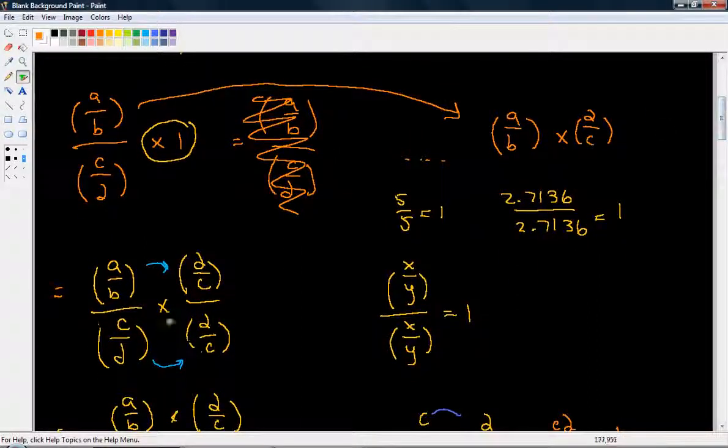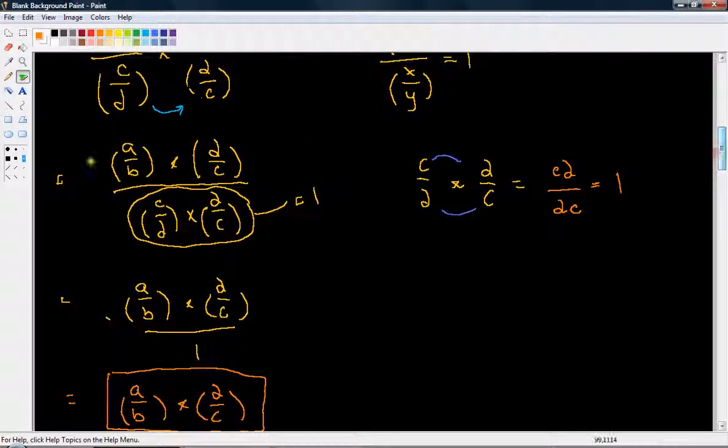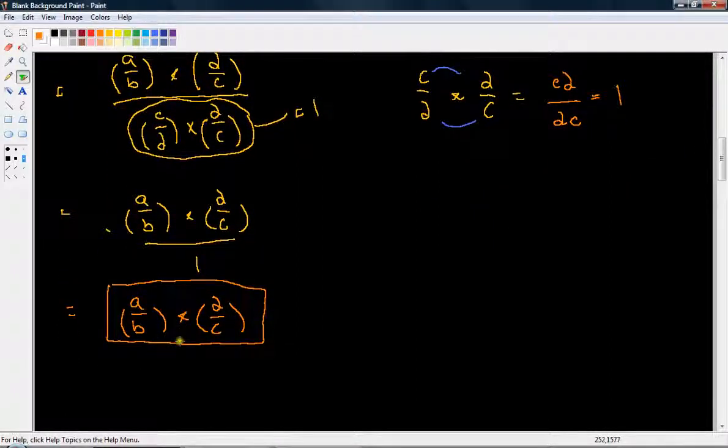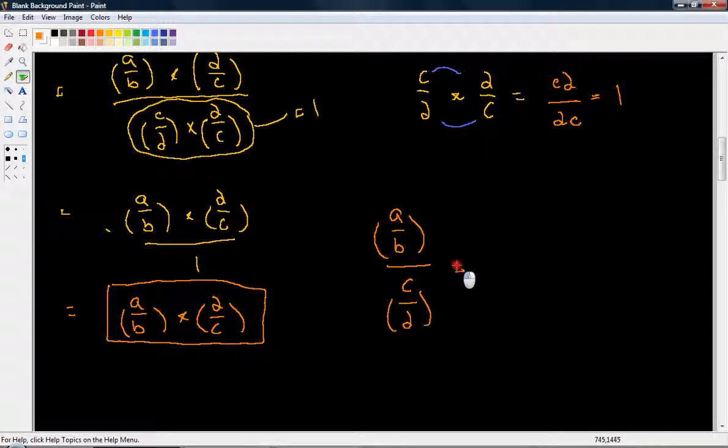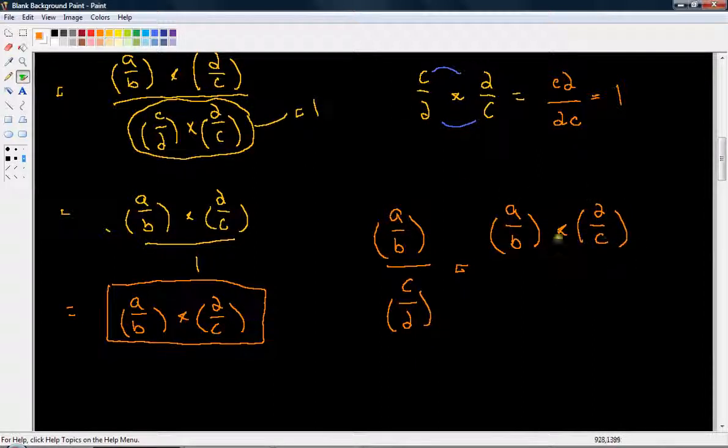And we do that because if we manipulate this with algebra, we can work our way down to eventually finding that same result. That we have a fraction, A over B divided by some other fractions, C over D. That is the same as A over B times the reciprocal of the denominator. So D over C. And then the easier multiplication rule follows from that.